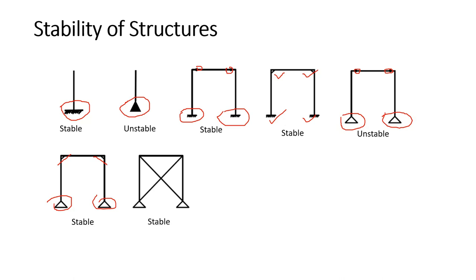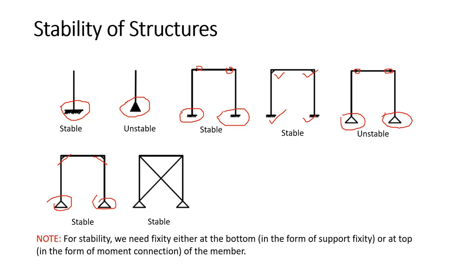What about the next one? This is also a stable structure — we will see why in the next few minutes. In order to provide stability, we need either fixity at the bottom in the form of support fixity, or fixity at the top at the beam-column junction in the form of a moment connection. If you have any one of these conditions, your structure will be stable.